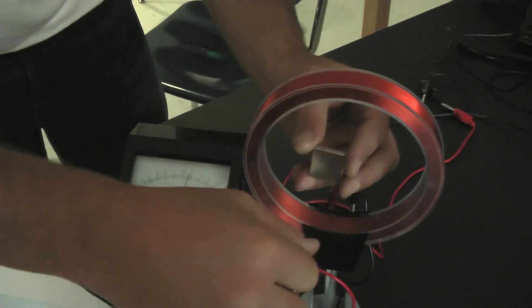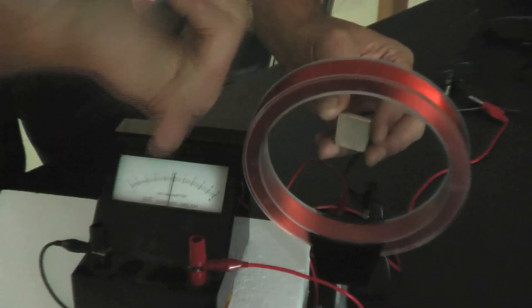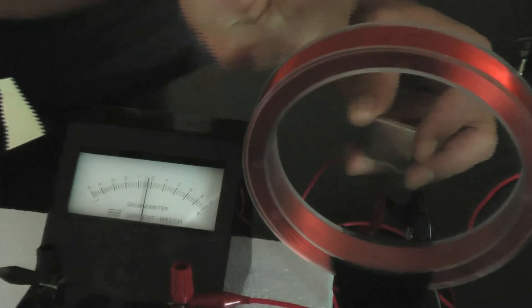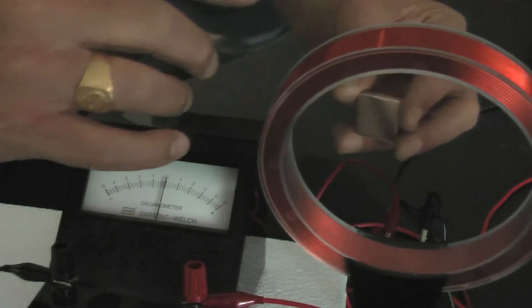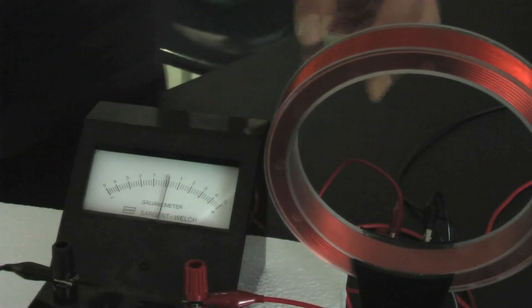Now as I bring it away, now this magnetic field is getting smaller, smaller, smaller, so the electricity flows in the other direction like this to keep it strong, to keep it where it was, to fight that change.